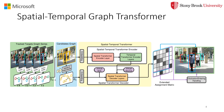The overall tracking pipeline of TransMOT is shown below. TransMOT takes the graph series of tracked targets and the candidate's graph as inputs and outputs the assignment matrix for the current frame.